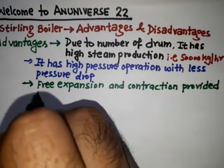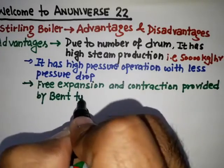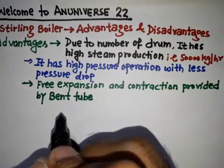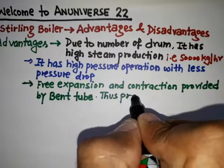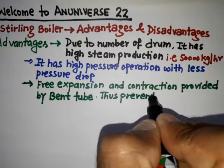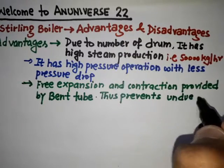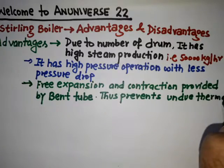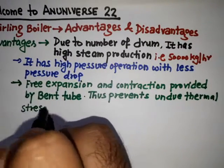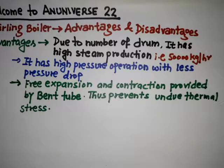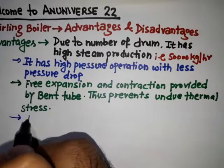Another advantage is that free expansion and contraction is provided by the bent tubes. These are the tubes by which the steam drums and mud drum are connected, and this prevents undue thermal stresses.